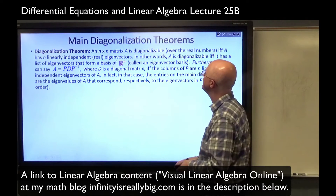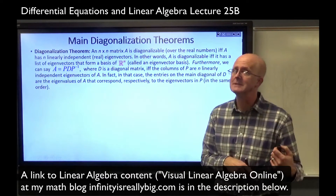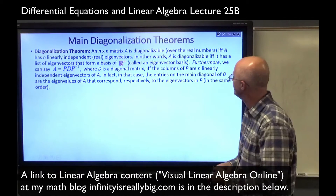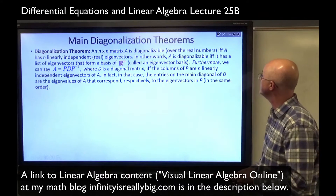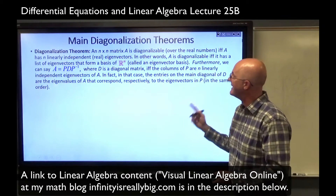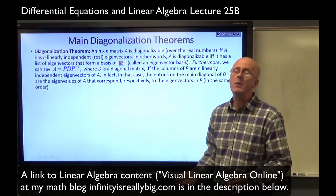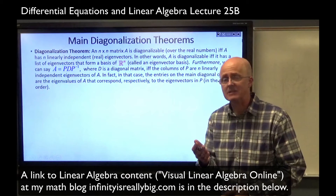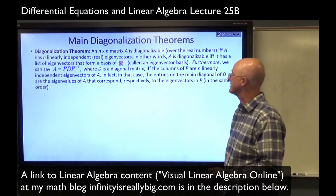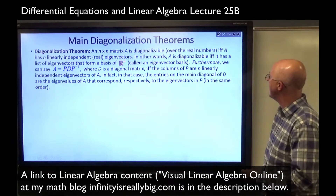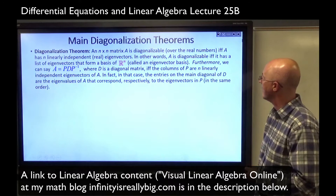An n-by-n matrix A is diagonalizable over the real numbers — you can talk about diagonalizability over complex numbers, but not in this lecture — if and only if A has n linearly independent real eigenvectors. A is n-by-n, so it's got to have n linearly independent eigenvectors. It's possible you could even have an eigenspace that's two-dimensional going with one eigenvalue. In other words, A is diagonalizable if and only if it has a list of eigenvectors that form a basis for Rn, called an eigenvector basis.